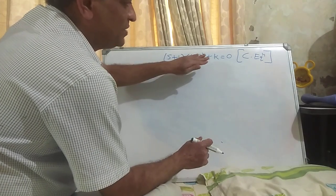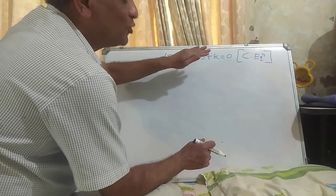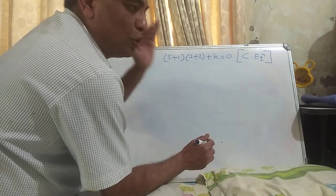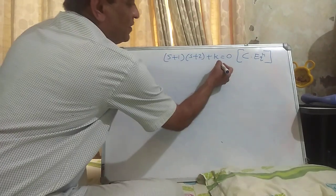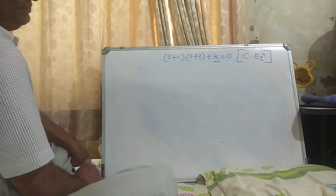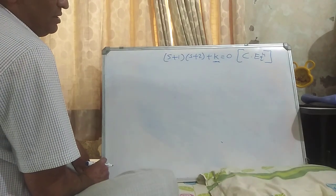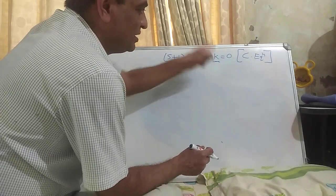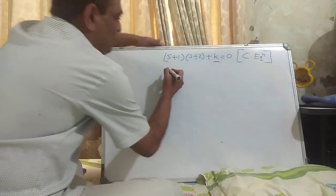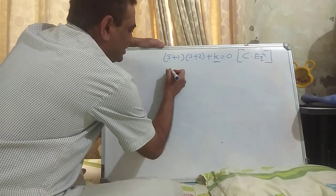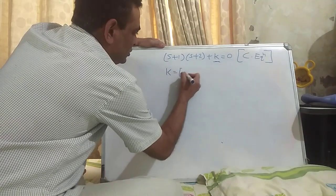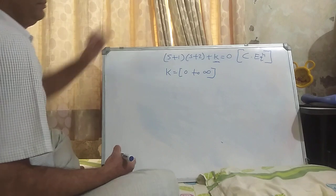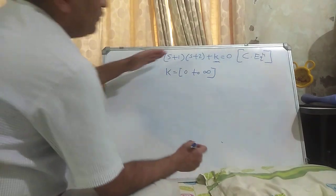The solution of the characteristic equation are the roots, and these roots are known as the closed-loop poles. They are functions of K, which means the closed-loop poles depend upon K. Now I want to vary K from 0 to infinity.